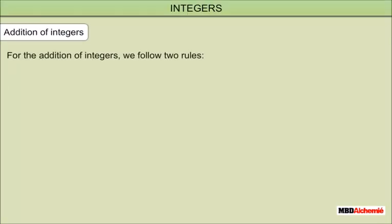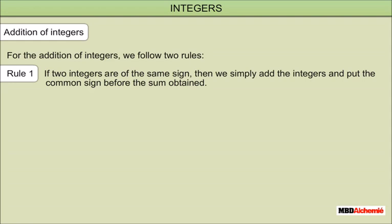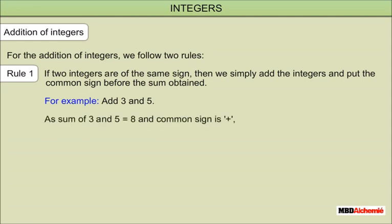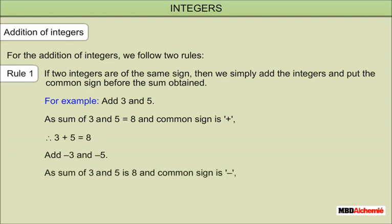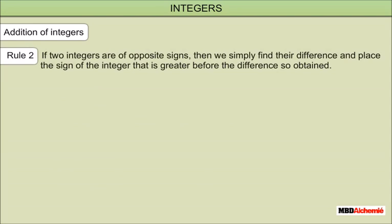Addition of integers — Rule 1: if two integers are of the same sign, we simply add the integers and put the common sign before the sum. For example: 3 plus 5 equals 8 (common sign positive); negative 3 plus negative 5 equals negative 8 (common sign negative).